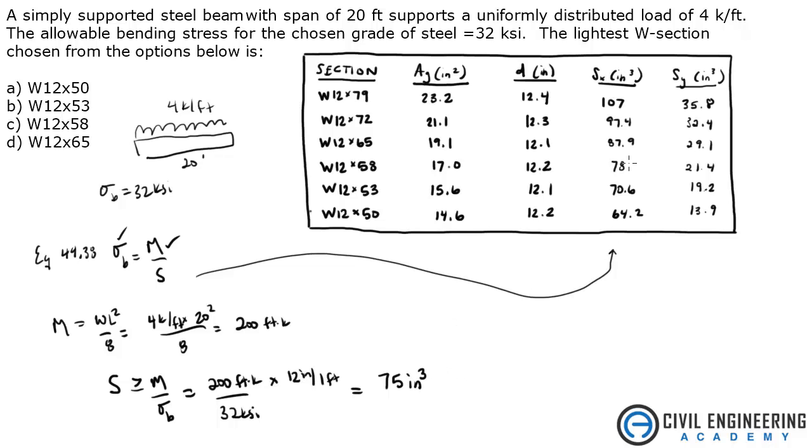So if I'm going to look at S in the X axis here, 78 is going to be the lightest W section because 78 is what's going to work for our loading on this beam since we need at least 75.